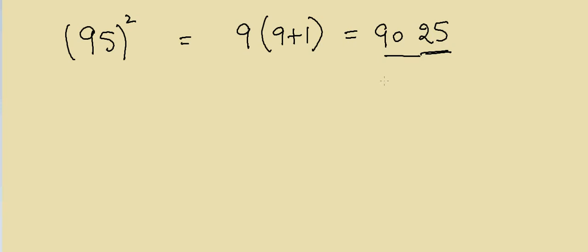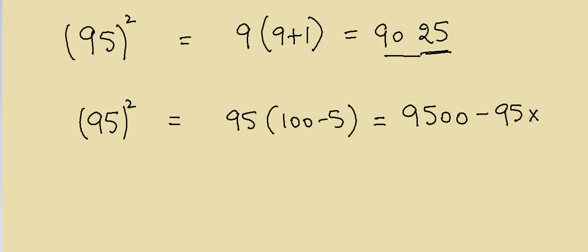Another way to do the same square: if you don't remember this trick, you can write it as 95 multiplied by (100 - 5). This becomes simple again. It's 95 times 100 minus 95 times 5. If you think about it, 95 times 5 is not that hard.